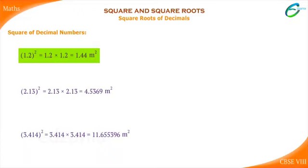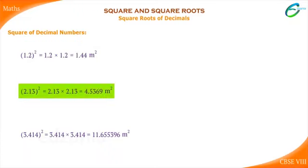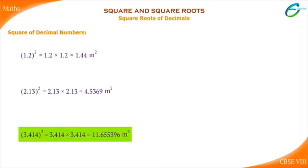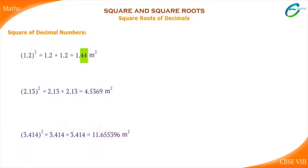The square of 1.2 is 1.44. The square of 2.13 is 4.5369. The square of 3.414 is 11.655396. The number of digits after the decimal point in 1.2 is 1. After squaring 1.2, the number of digits after the decimal point is 2 in the number 1.44.